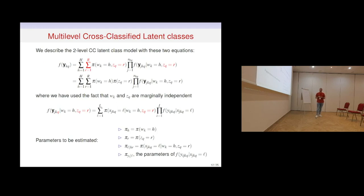The model is described by two equations. The first for the two second levels is a mixture with weights P(W, Z), which we split into P(W) times P(Z) under the assumption that W and Z are marginally independent. The second equation is a mixture for the lower level, with weights being the probability of X given membership for the two higher levels. The total parameters are the mixing proportions P_H and P_R for the two second levels, the mixing proportions P_L given H, R for the first level, and the distribution parameters.